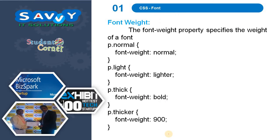Now font weight. The font-weight property specifies the weight of a font. The font-weight can be normal, lighter, bold, or 900. These represent different thickness levels — thicker, thick, light, and normal respectively.